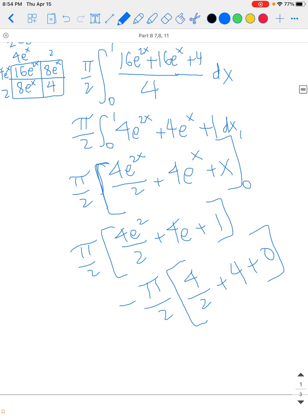If you add that up, you have 2 + 4, which is 6. So on the bottom here, the minus sign, you have minus 6 times π/2, so minus 3π. And then in the top, if you multiply in the π/2, you're going to end up with πe^2 + 2πe plus π/2.